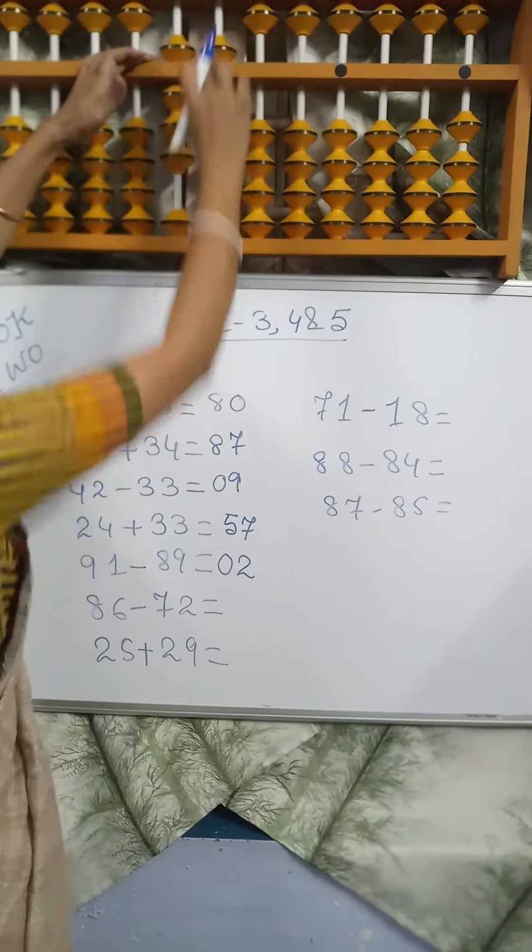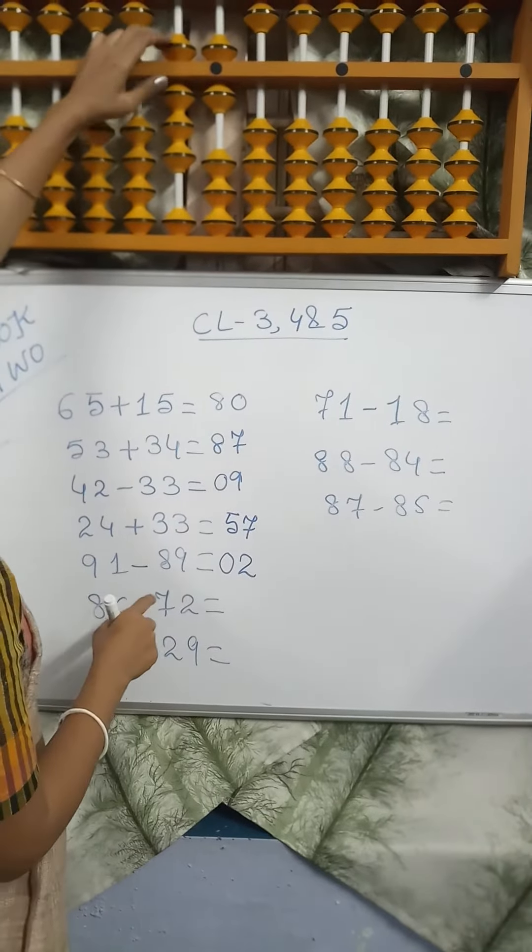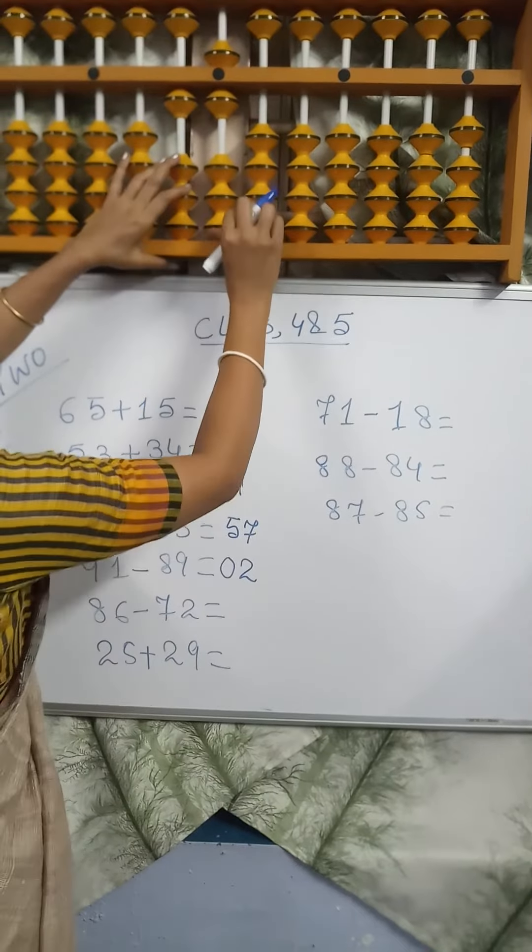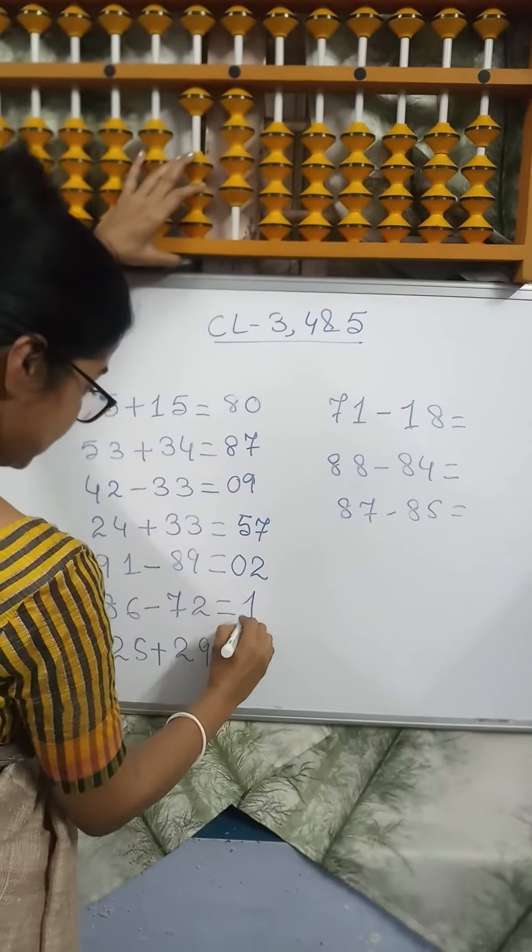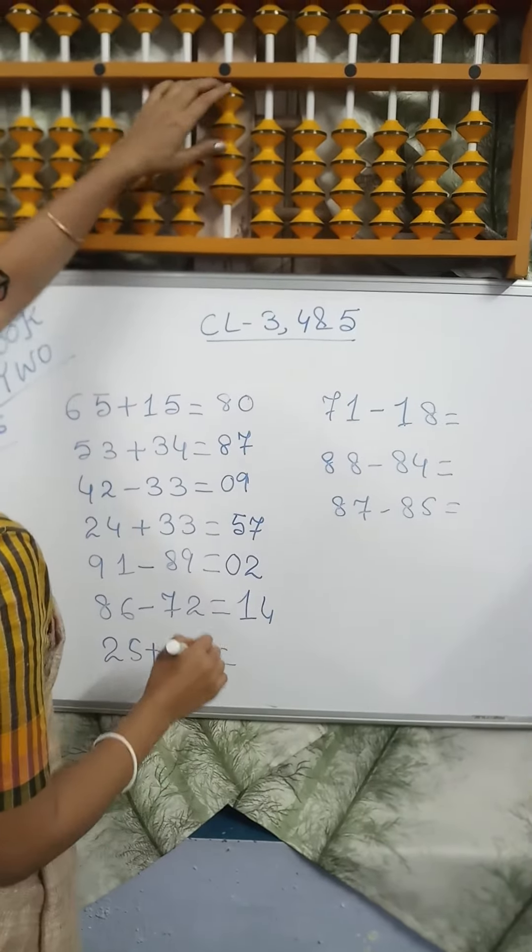86 minus 72. Minus 70 direct, minus 2 in small frame, plus 3 minus 5. Answer is 14. Next sum.